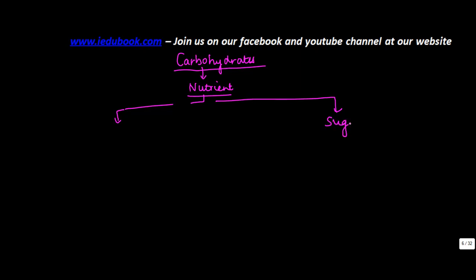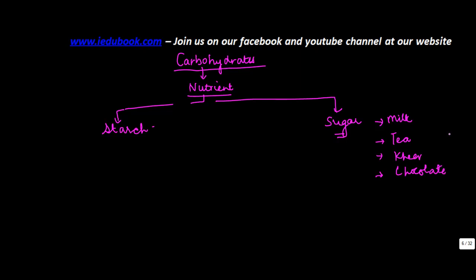Sugar is something you are more than aware of — you have sugar in your milk, in tea, in kheer, in chocolates, and so on. All these contain sugar, so sugar is something we already understand. Now let's look at starch.